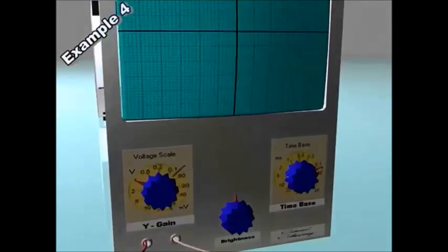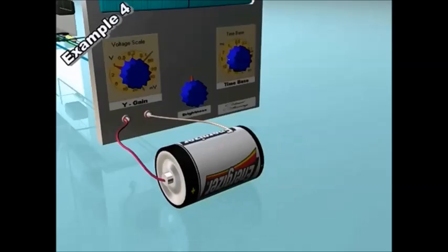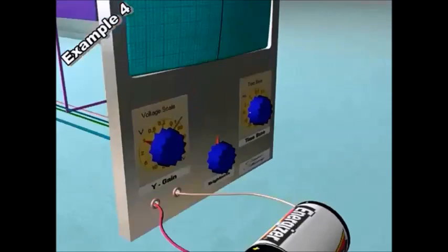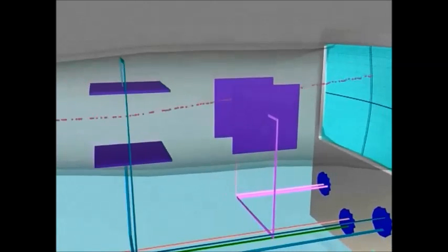Now, what we might do after that is turn the battery around. What do we think is going to happen? They go down. Instead of being attracted towards the top plate, now the negative electrons are attracted towards the positive bottom plate. So instead of getting a dot three squares up, we can see a dot on the screen three squares down.